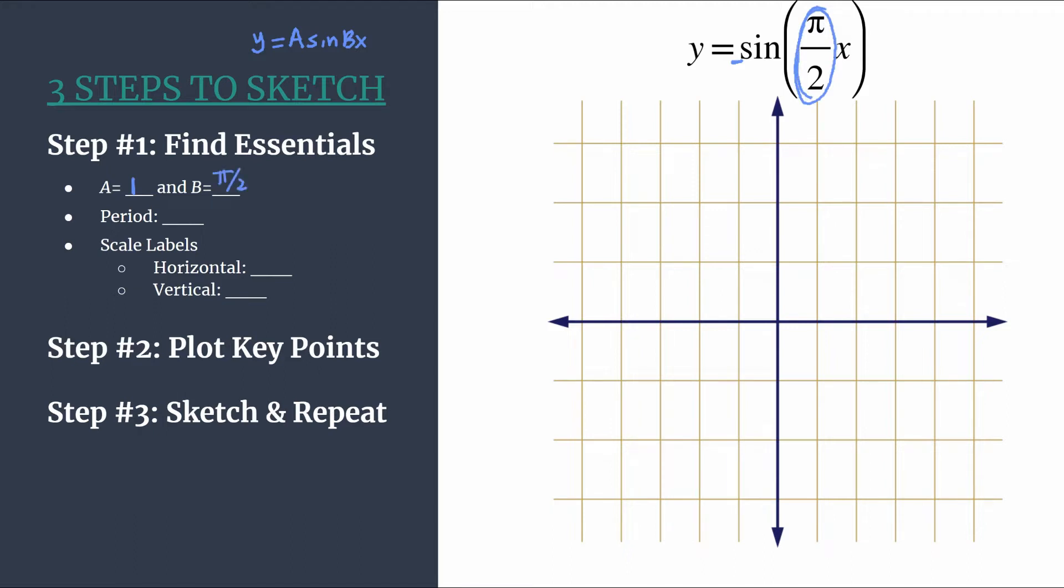And then b, we can see is this pi over 2 coefficient in front of x. So to break that down like we usually do, b tells us a lot of information about our graph. First of all, it tells us how many cycles happen between zero and two pi.